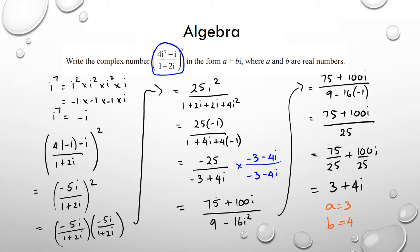Just checking the schedule: for merit, that full solution is your merit. For achieved, getting to the line negative 25 over negative 3 plus 4i is sufficient. So basically if you get up to that point you're looking at an achieved. On to the next question.